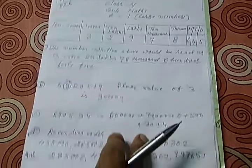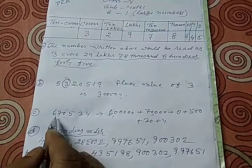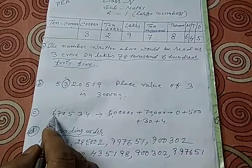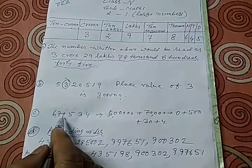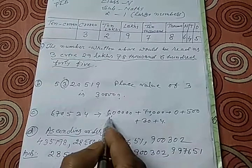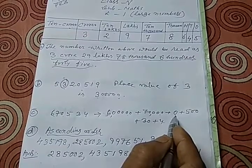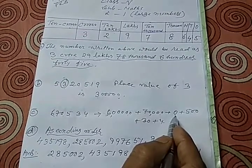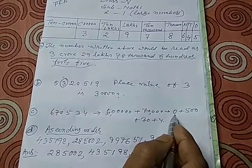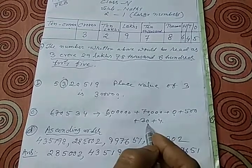Now, you are given a number like this: 670534, that is 6,70,534. You can expand this number like this: 6 lakhs plus 70,000 plus 0, because in 1000 place there is 0. So you have to put 0 in 1000 place. Now, 500 plus 30 plus 4.